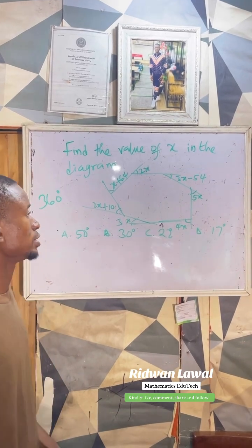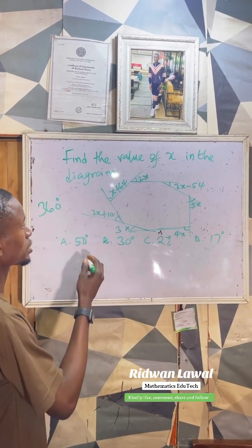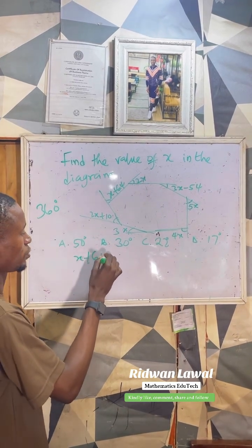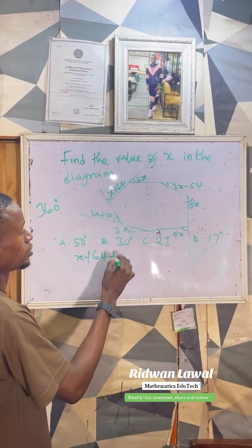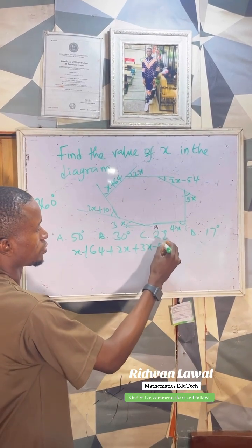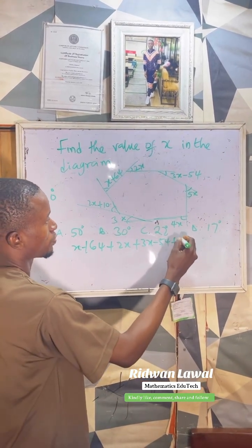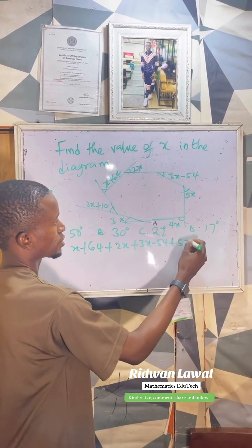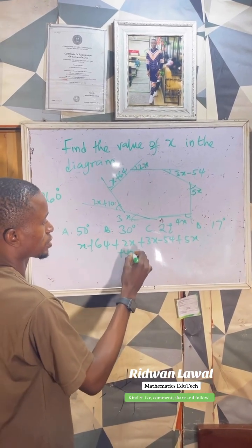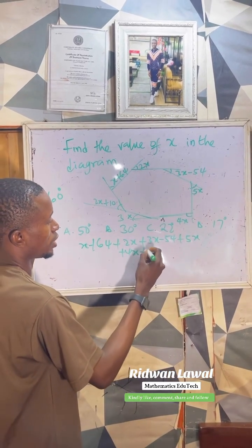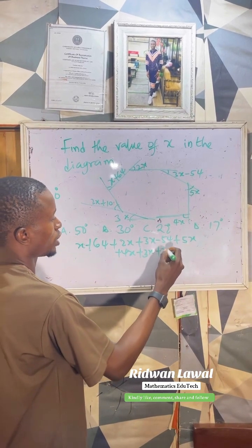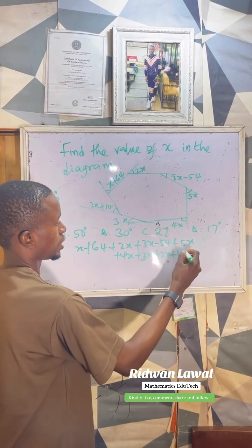Now let's look at the solution. The first angle expression is x plus 64, then x plus 64, then 2x, plus 3x minus 54, plus 5x, plus 4x, plus 3x, then plus 2x plus 10.